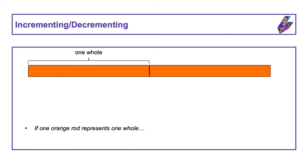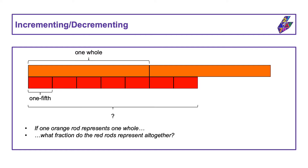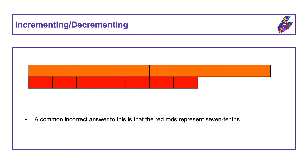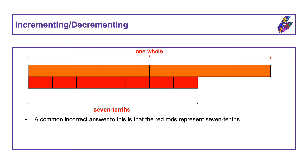If the orange rod represents one whole, what fraction do the red rods represent altogether? Think about whether there's more than one way to say this. A common incorrect answer is that the red rods represent seven-tenths. People might think this because they see the two orange rods and think that this is the whole. If this was the whole, then one red rod would be worth one-tenth because it could be iterated ten times into the whole. If the red rod is one-tenth and you have seven lots of one-tenth, then you would have seven-tenths of one whole.